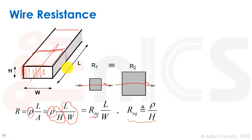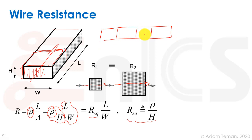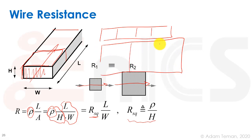We can simply count the number of squares in a given conductor. For example, if there are four squares, the resistance is four times R-square. Even if we take a much bigger conductor that is also wider, if it has the same number of squares, the resistance is exactly the same.